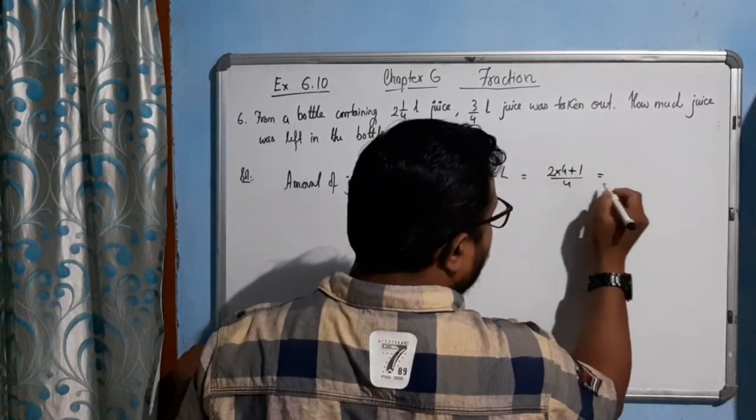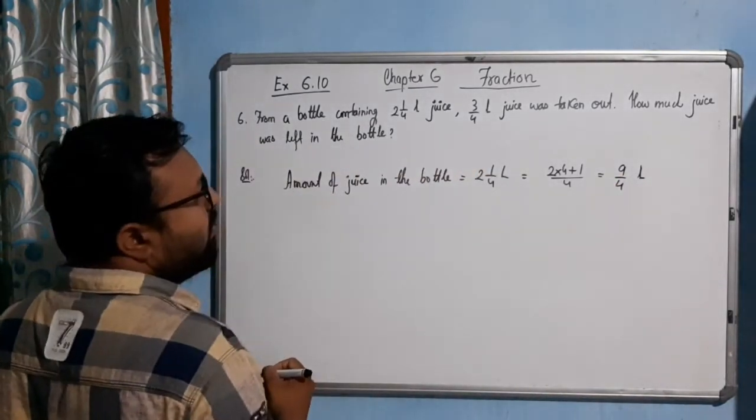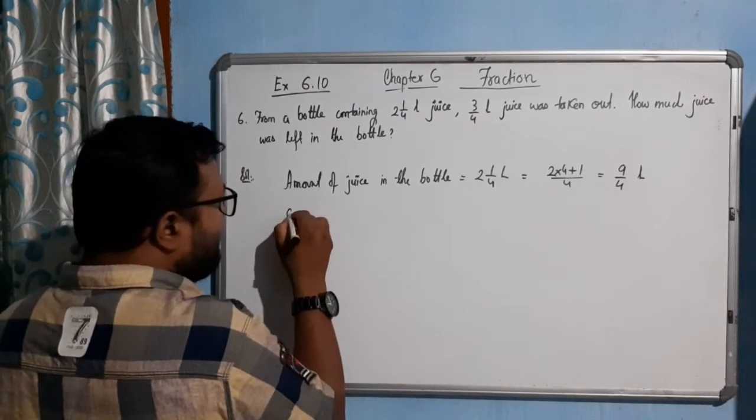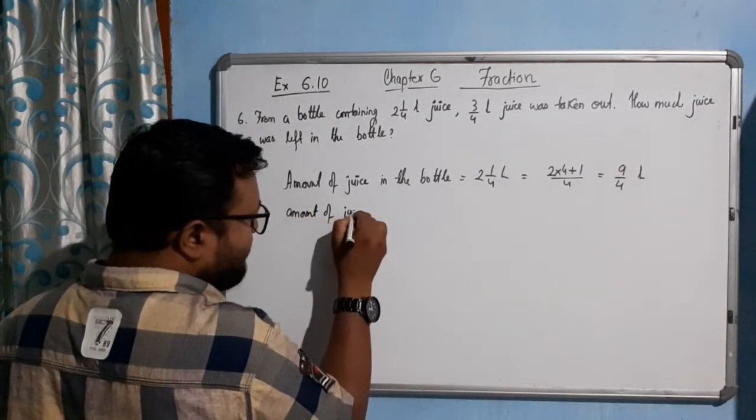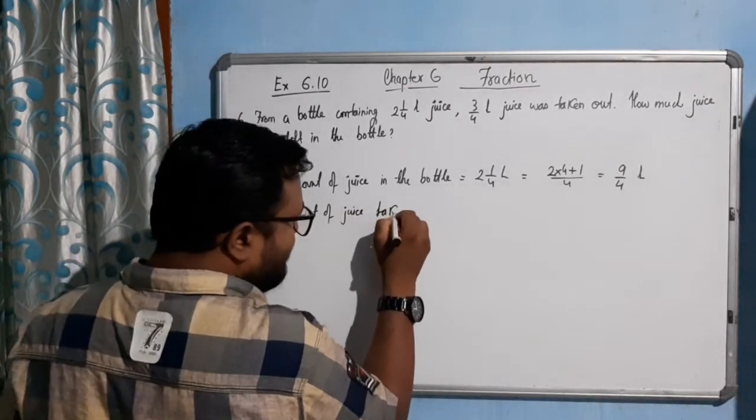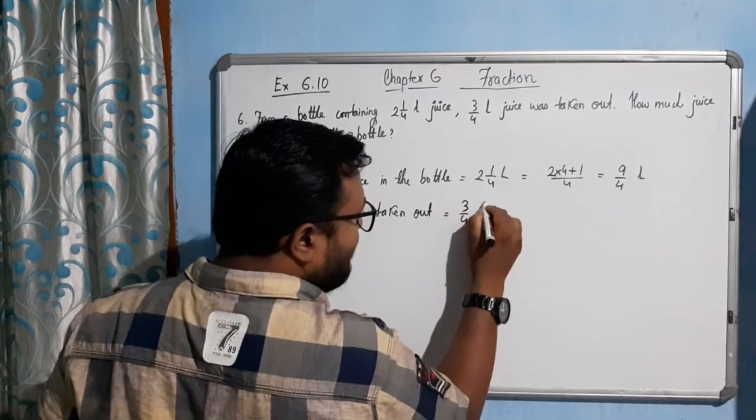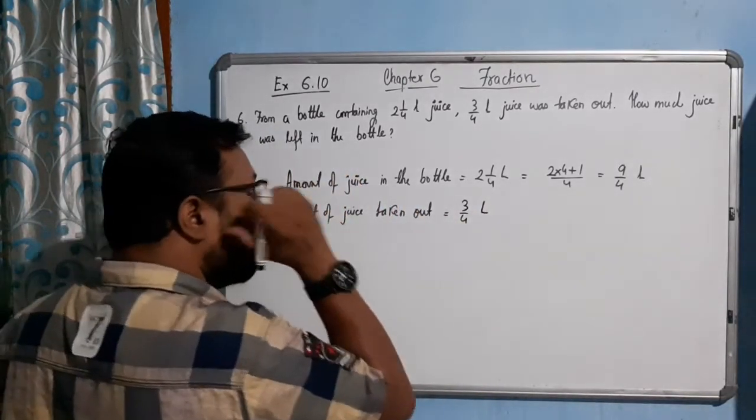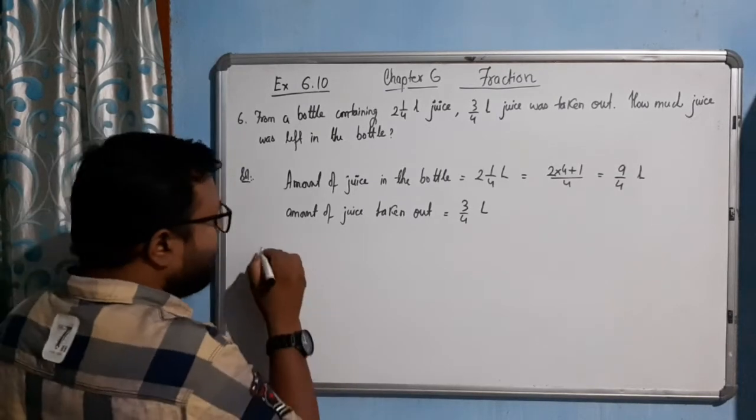Now, amount of juice taken out equal to how much? 3 by 4 liter. Therefore, amount of juice left in the bottle will be...